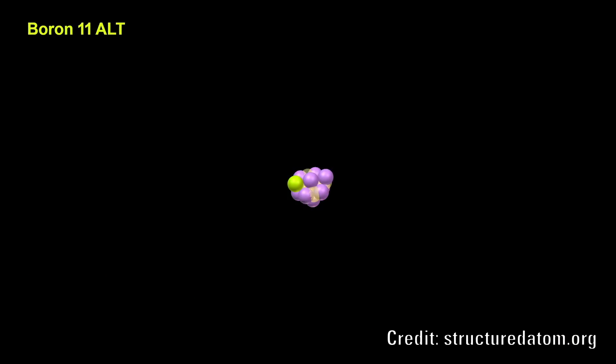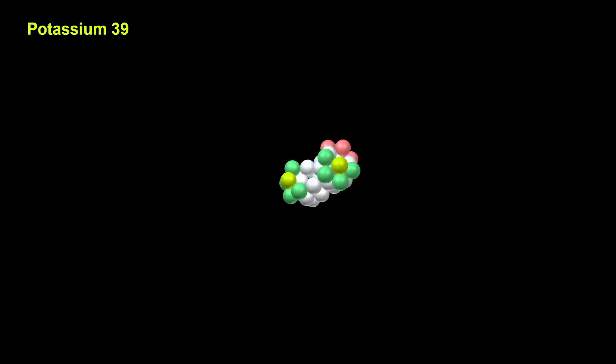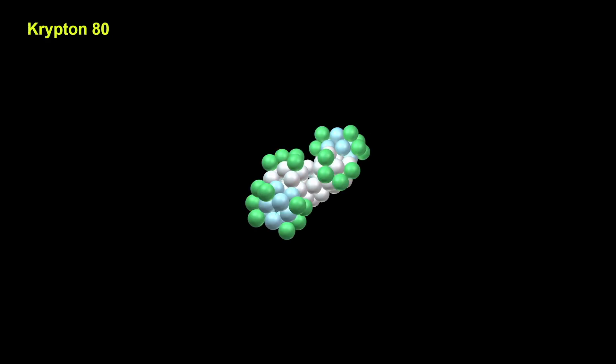One of the main insights obtained from the SAM model is that the inner nuclear structure dictates the chemical properties of the element. Being able to visualize the nucleus can potentially provide structural clues to the outer electron configuration.